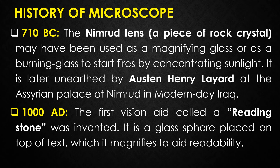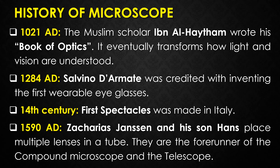Next, in 1080 AD, the first vision aid called the reading stone was invented. The reading stone is a glass piece placed on top of text to magnify it and aid readability. In 1021 AD, the Muslim scholar Ibn al-Haytham wrote and published his Book of Optics, which eventually transformed how light and vision are understood.